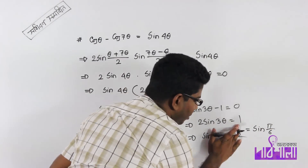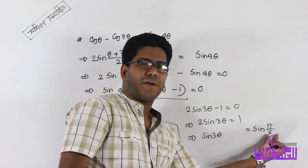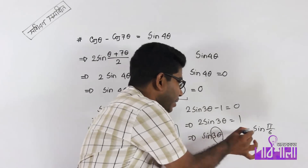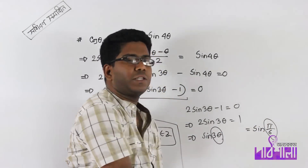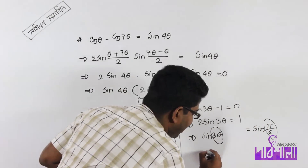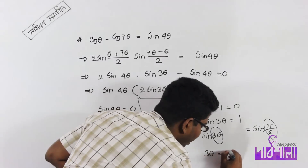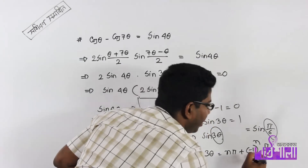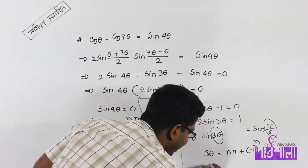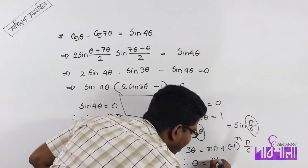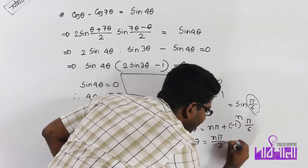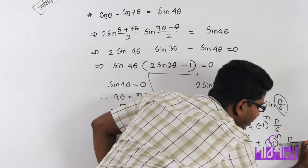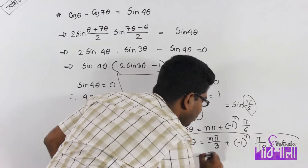We write sin 3θ equal to sin α, where α = π/6. The general solution is: 3θ equal to nπ plus minus (−1)^n into α, where n belongs to Z.